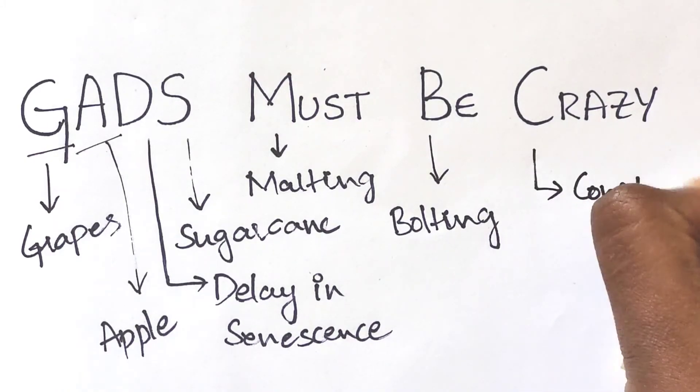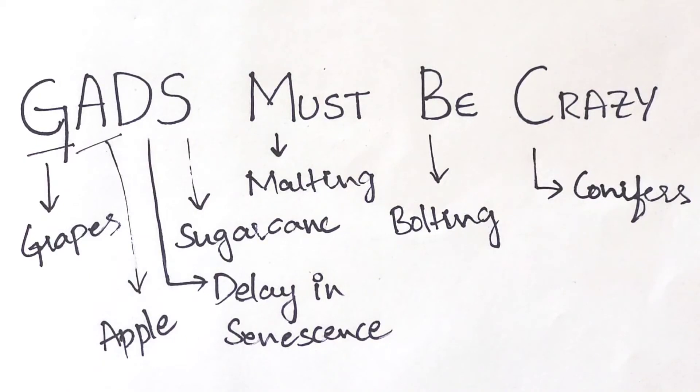C for conifers. If we spray gibberellic acid to the young conifers like pine, it fastens the maturity period which helps in early seed production.